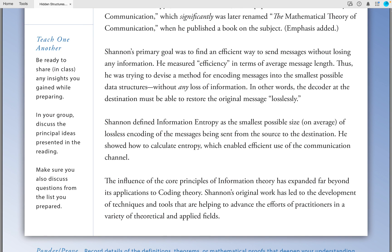In other words, the decoder at the destination must be able to restore the original message losslessly. Shannon defined information entropy as the smallest possible size, on average, of lossless encoding of the messages being sent from the source to the destination.